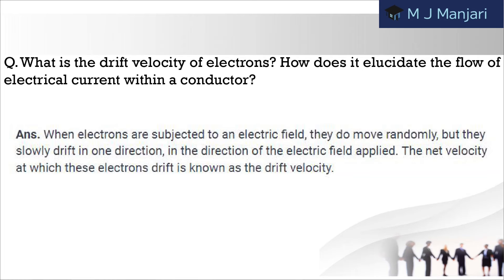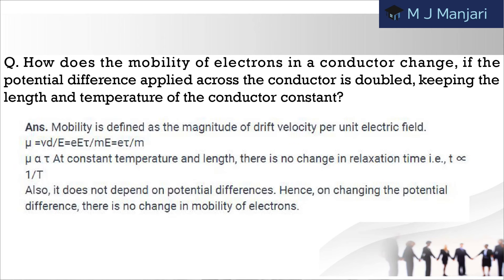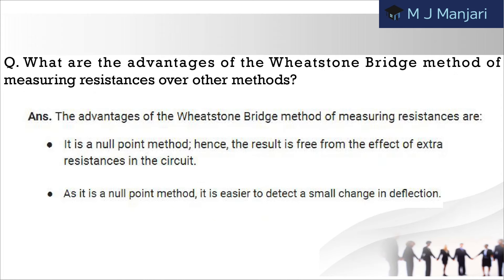Next: what is the drift velocity of an electron? How does it elucidate the flow of electrical current within a conductor? Next: what is the rationale behind utilizing alloys in the creation of standard resistance coils? How does the mobility of electrons in a conductor change if the potential difference applied across the conductor is doubled, keeping the length and temperature of the conductor constant?